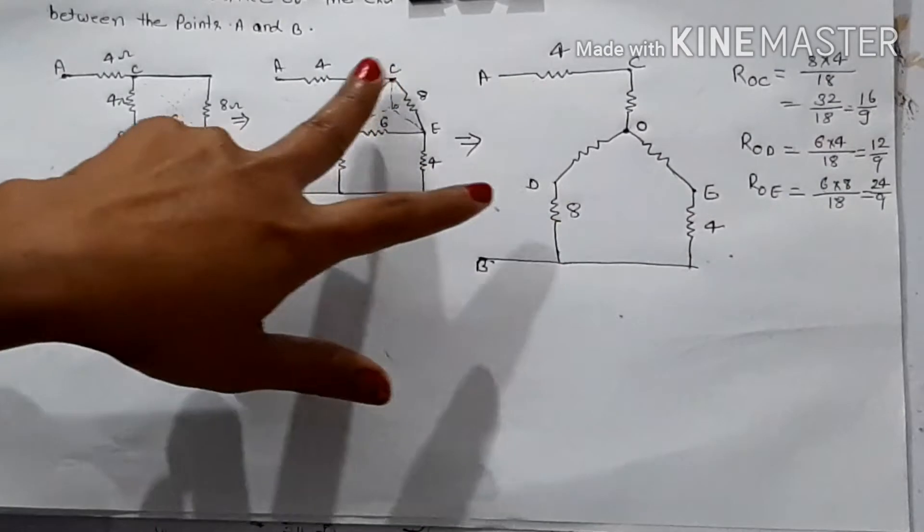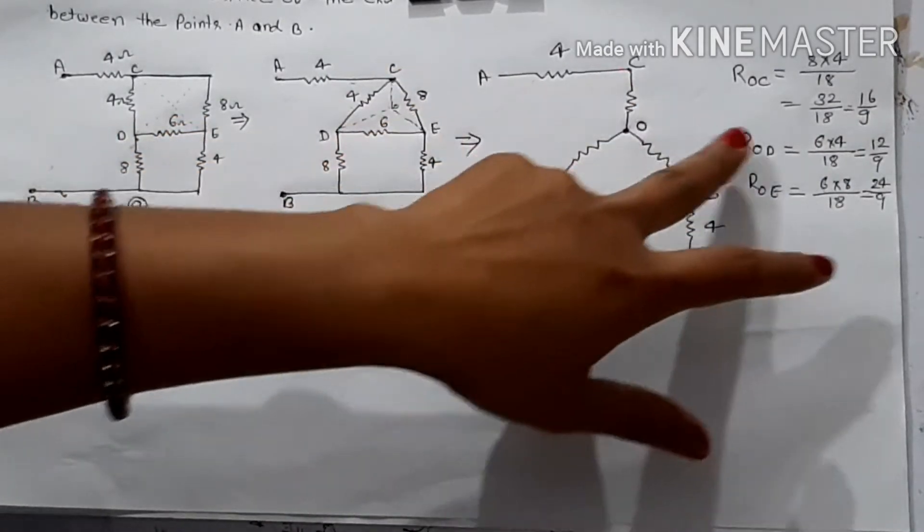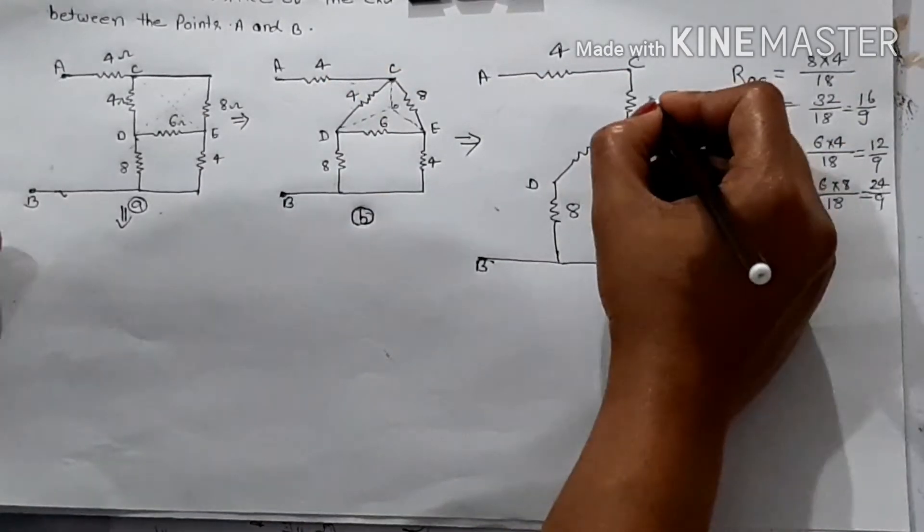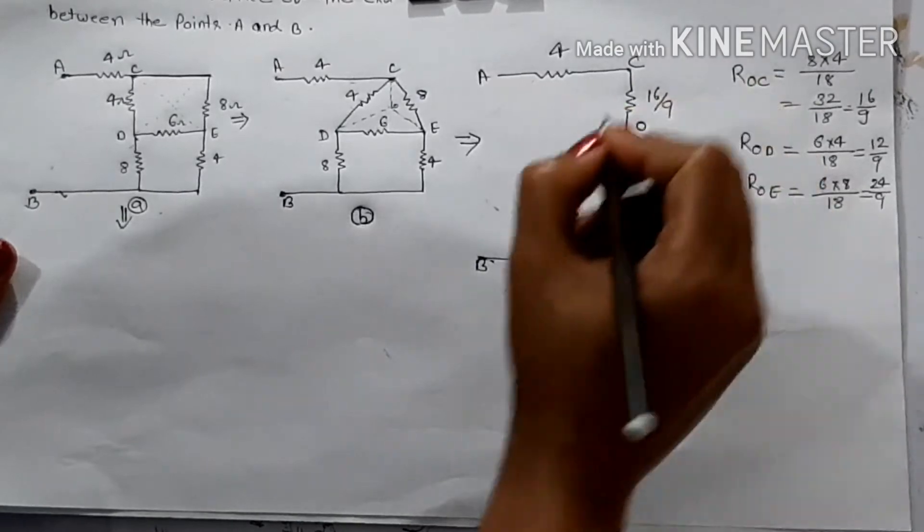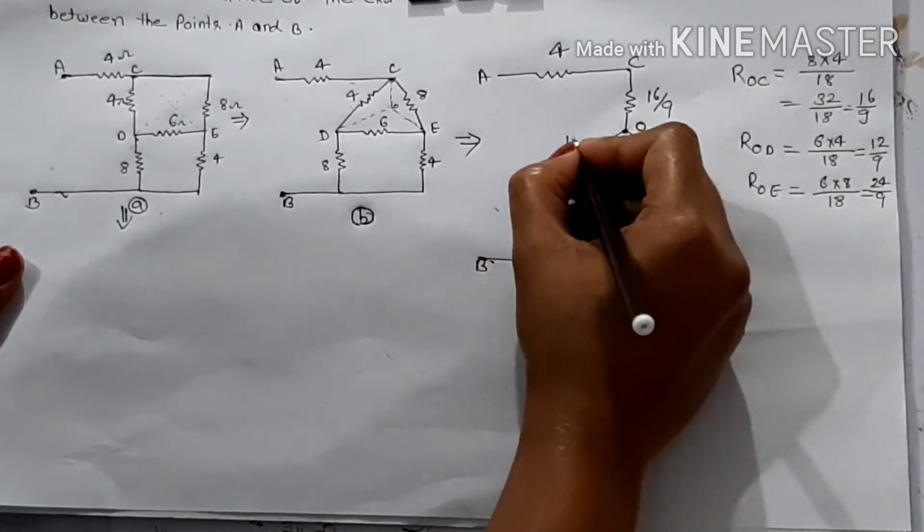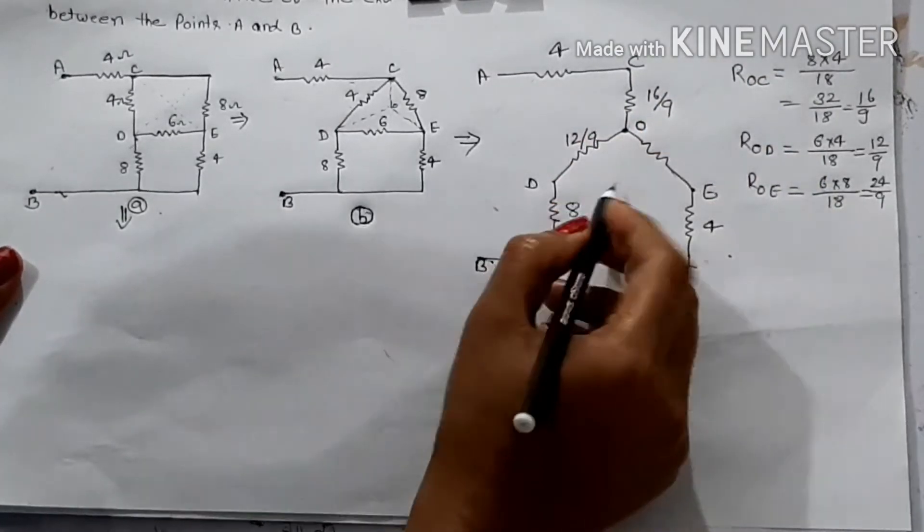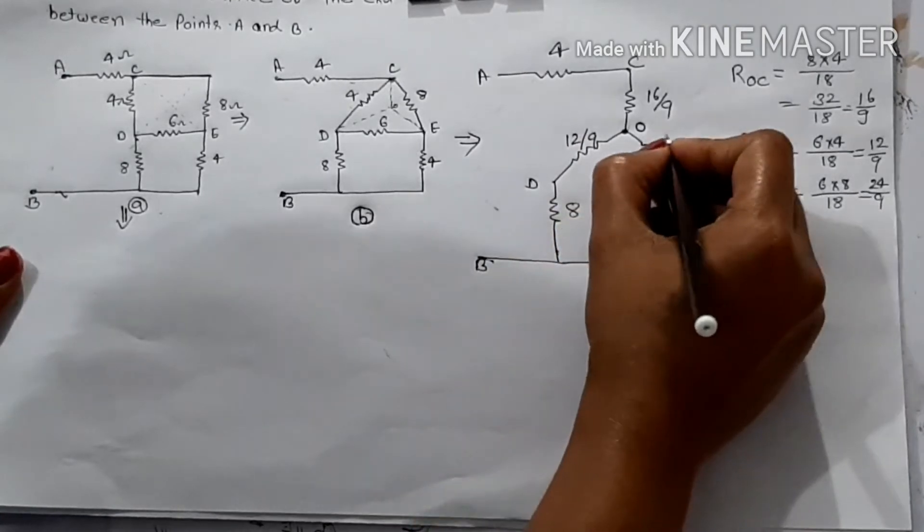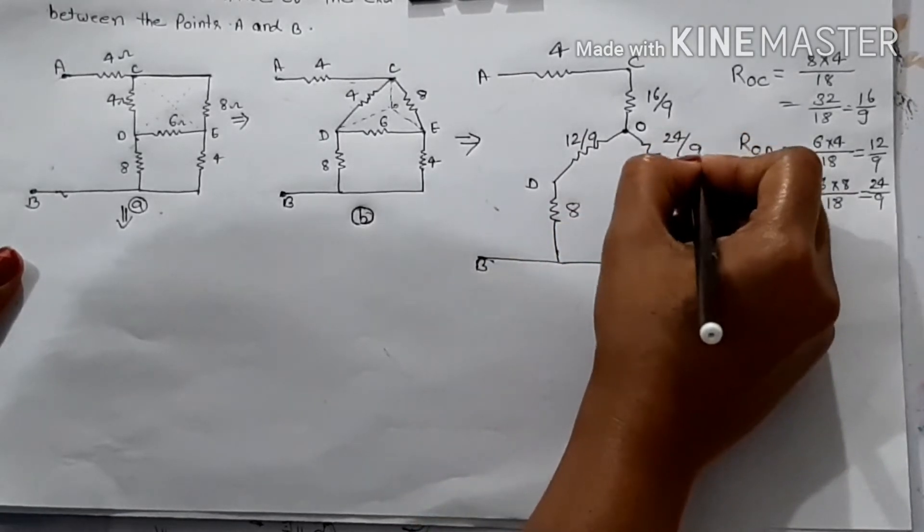Then ROC is 16 upon 9, ROD is 12 upon 9, and ROE is 24 upon 9. Okay?